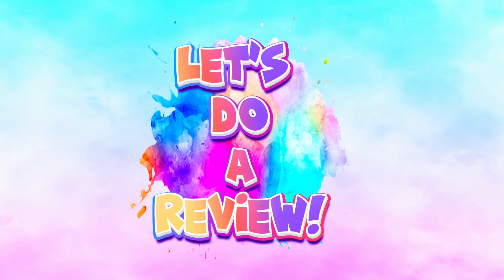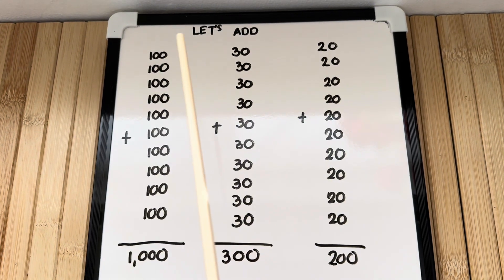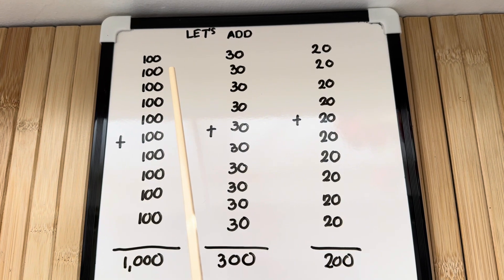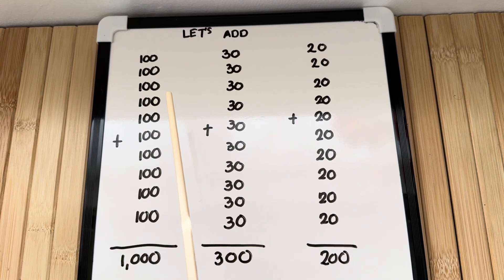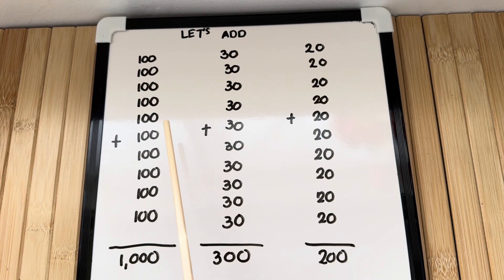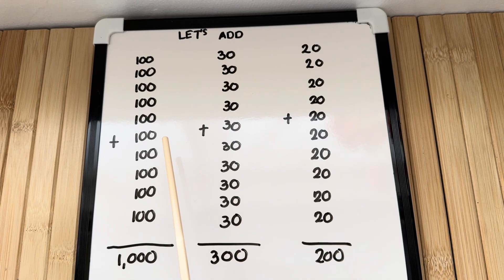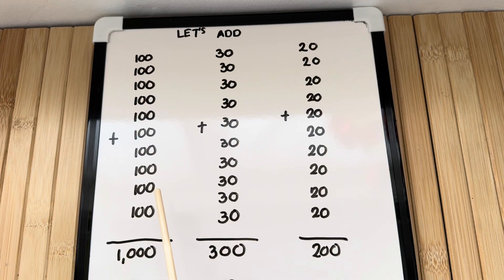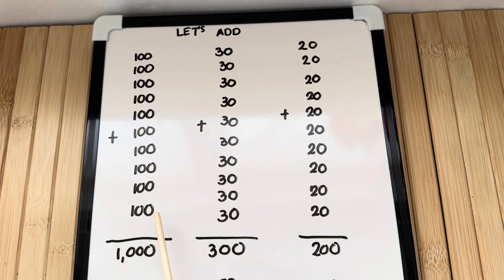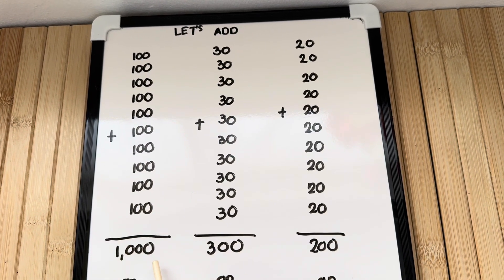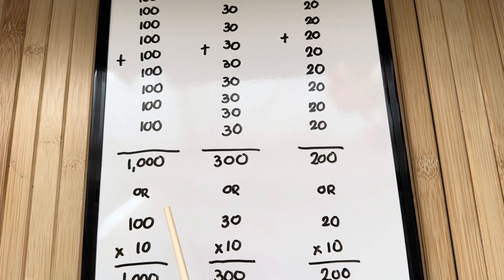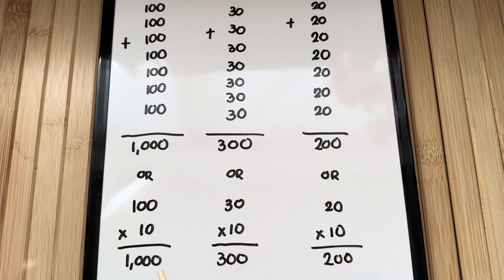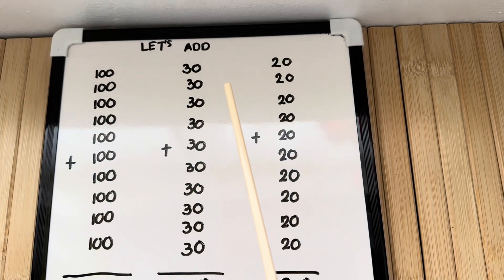Let's do a review. Come on, let's add: 100 plus 100 plus 100 plus 100 plus 100 plus 100 plus 100 plus 100 plus 100 plus 100 plus 100 plus 100 is equals to 1,000, or 100 times 10 is equals to 1,000.